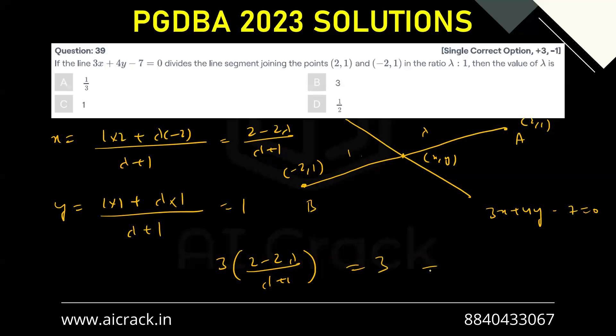If you solve it further, we'll be getting 6 minus 6 lambda equals 3 lambda plus 3. So we have 9 lambda equals 3, so basically lambda equals 1 by 3. So A is the correct answer.